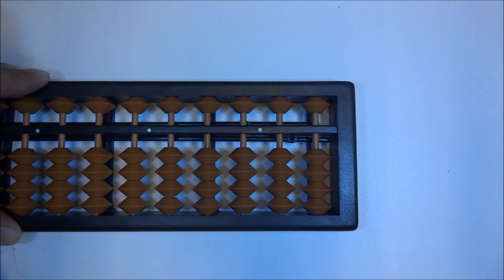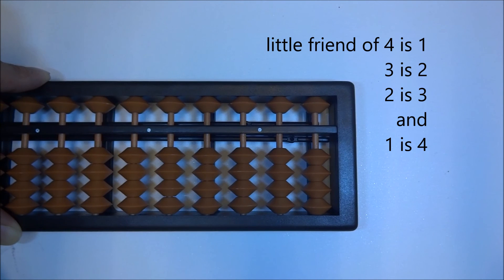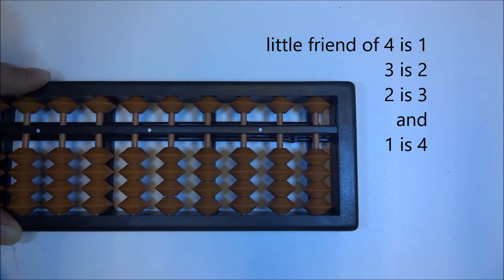Throughout the remainder of the video and the following videos, we're going to use the terminology little friends. So we want to make sure that you remember really well the little friends at the base level 5 with the ranges 1 through 4. So little friend of 4 is 1. Little friend of 3 is 2. Little friend of 2 is 3. And little friend of 1 is 4.